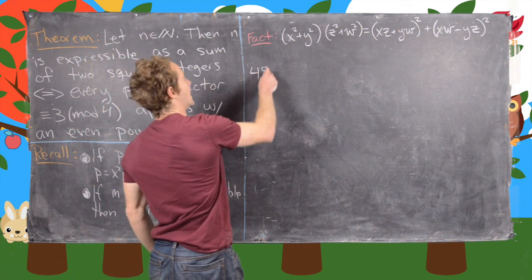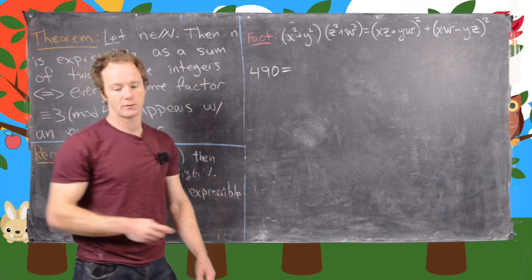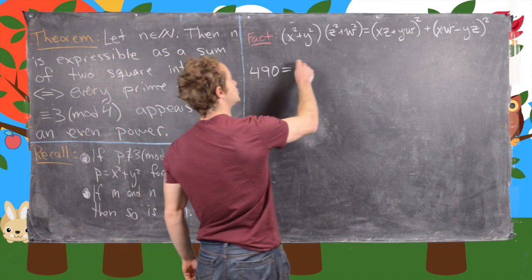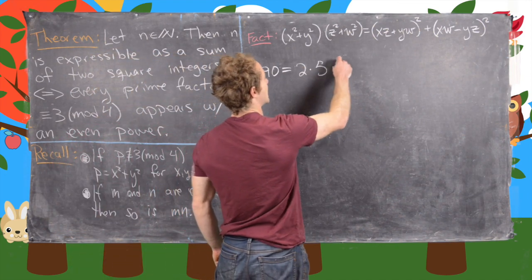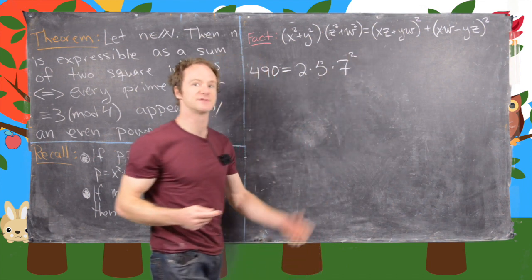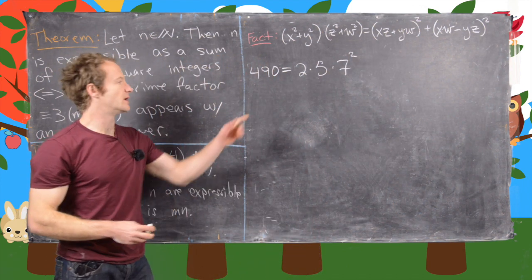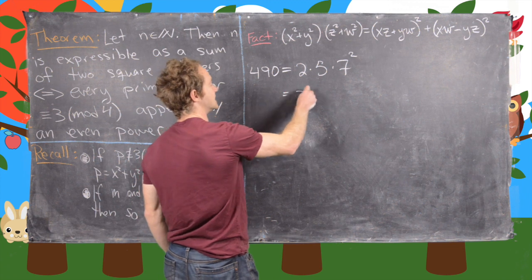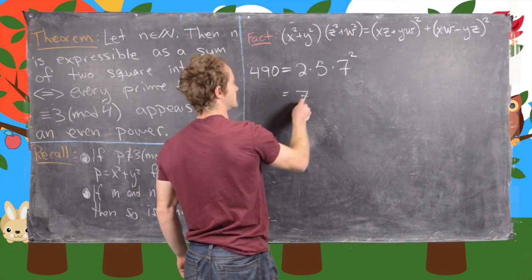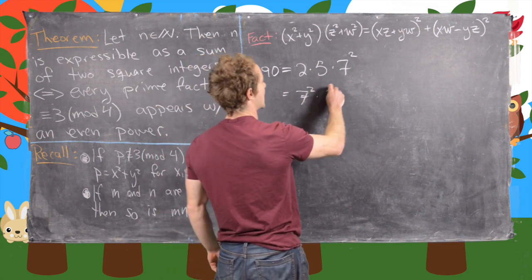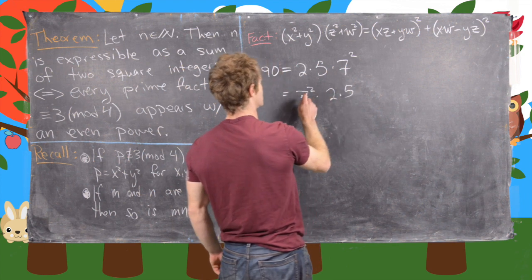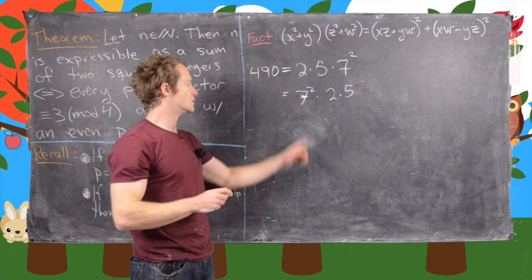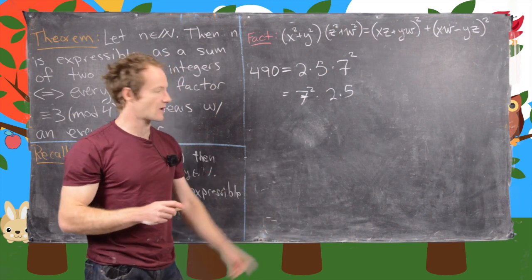So let's start off with 490. And we'll notice that 490 is 2 times 5 times 7 squared. So it's 10 times 49. But now notice we can write that as 7 squared times 2 times 5. So why did I do that? I brought the thing that was congruent to 3 mod 4 out front.